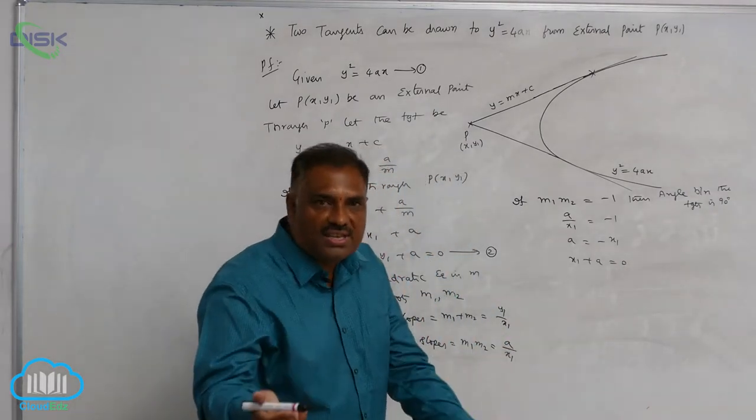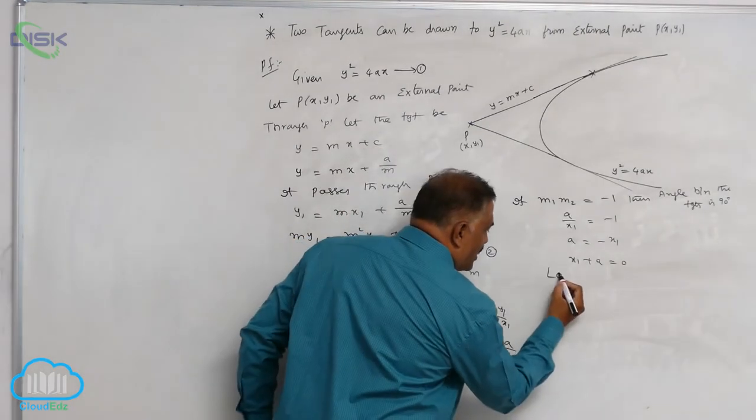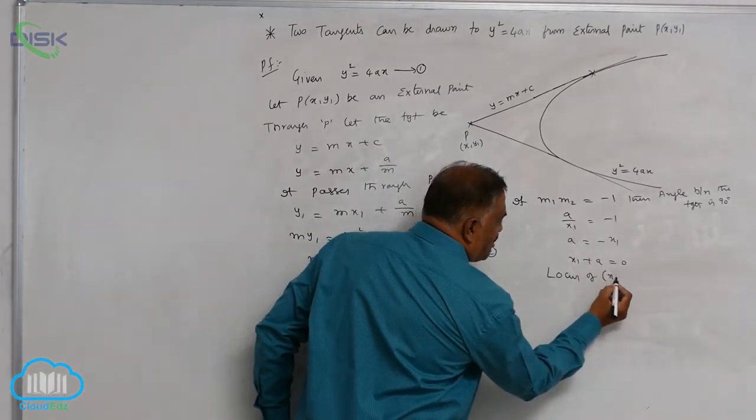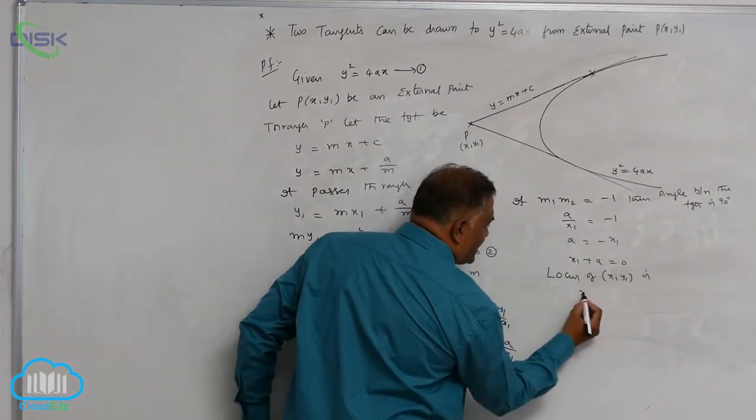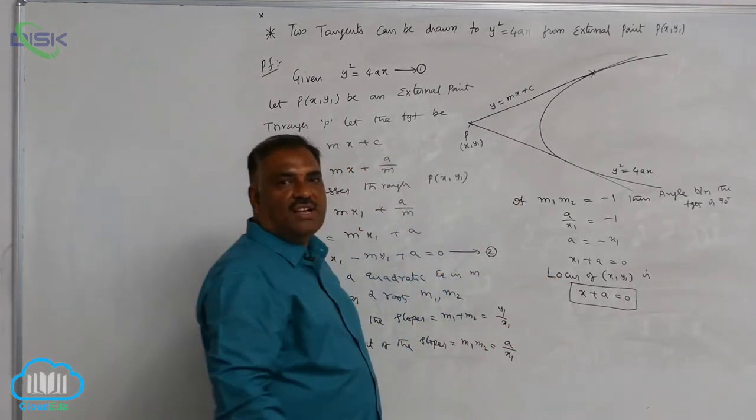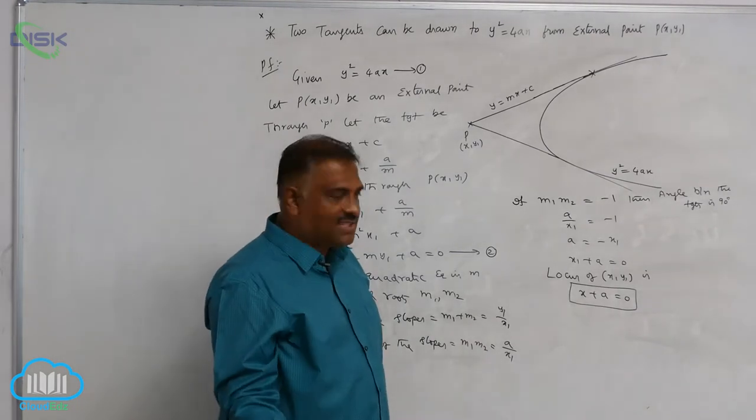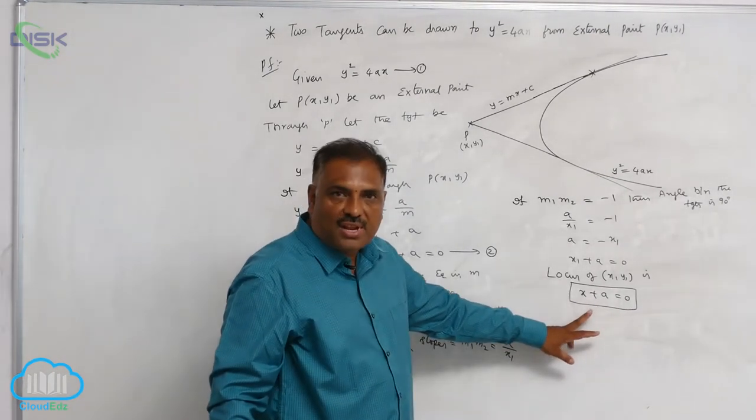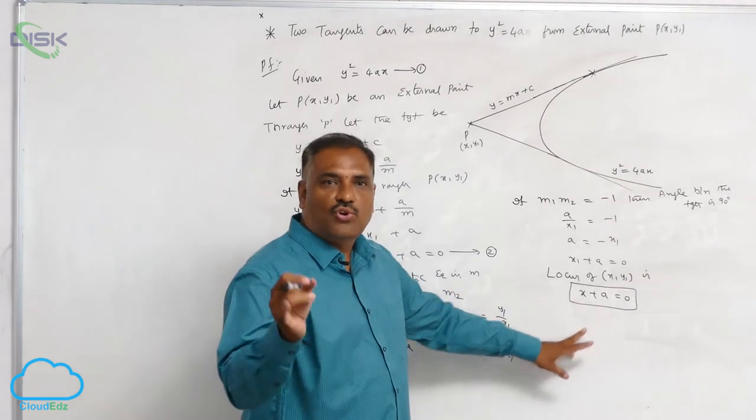Collection of all these points, that is locus of x1, y1, is x plus a is equal to 0. All of you know that this is nothing but equation of directrix for the standard parabola y square equal to 4ax.